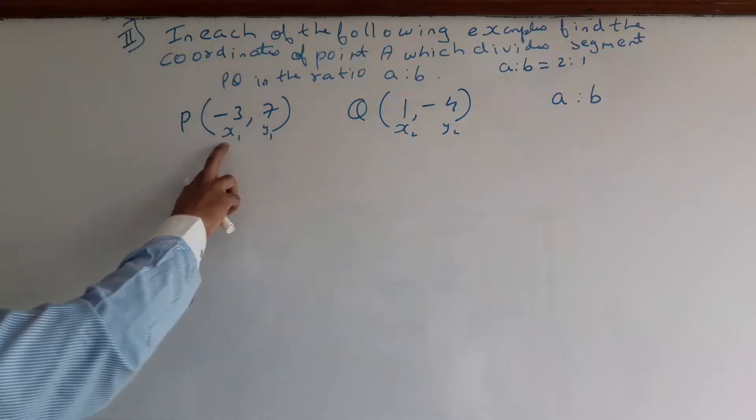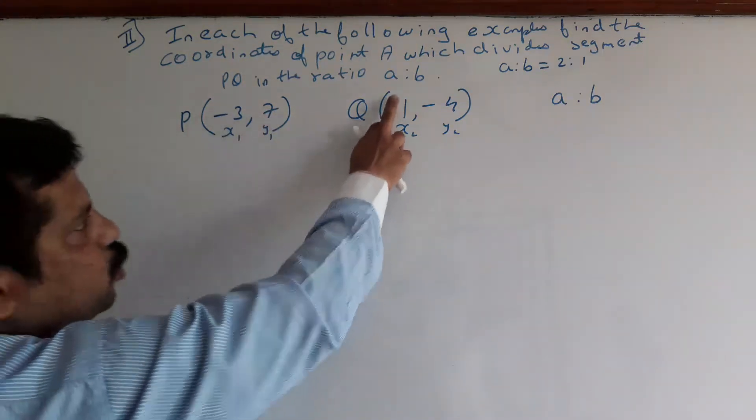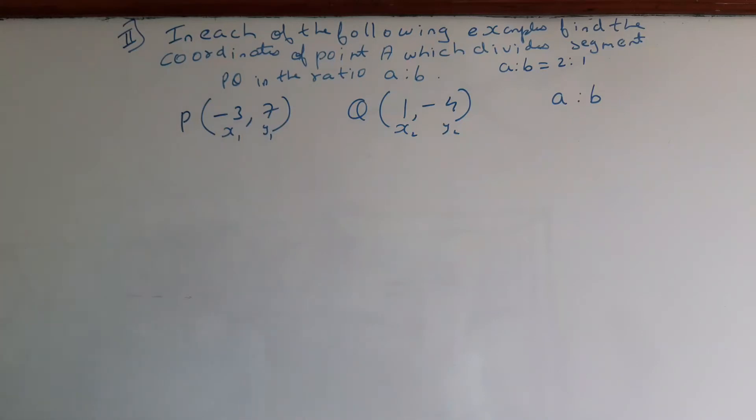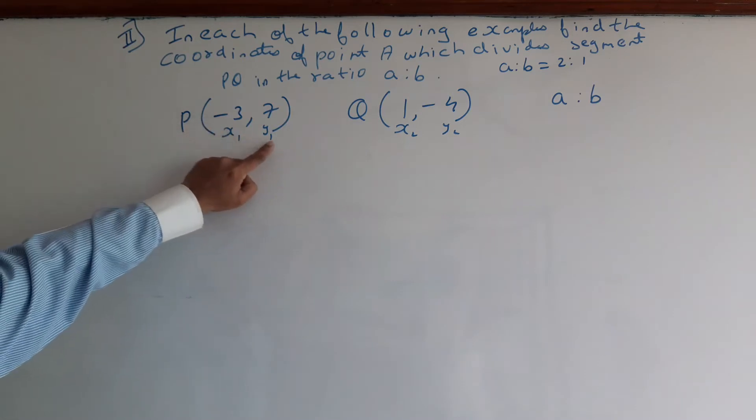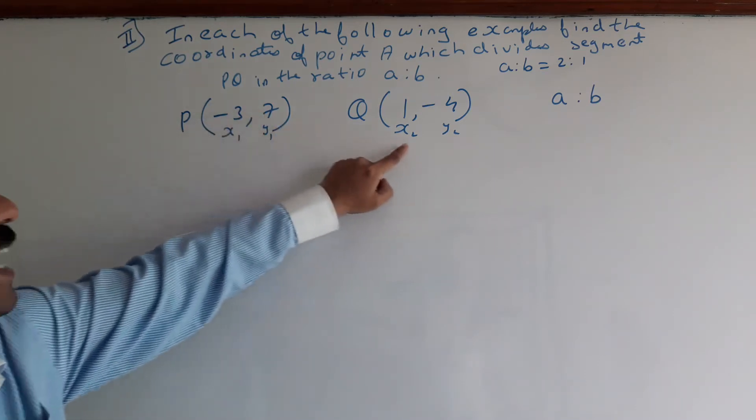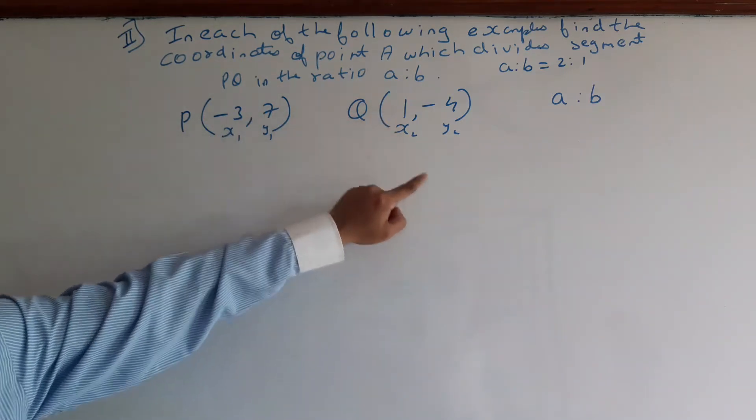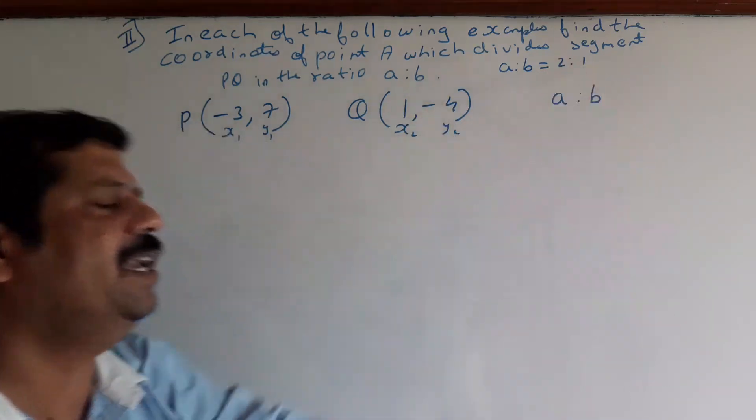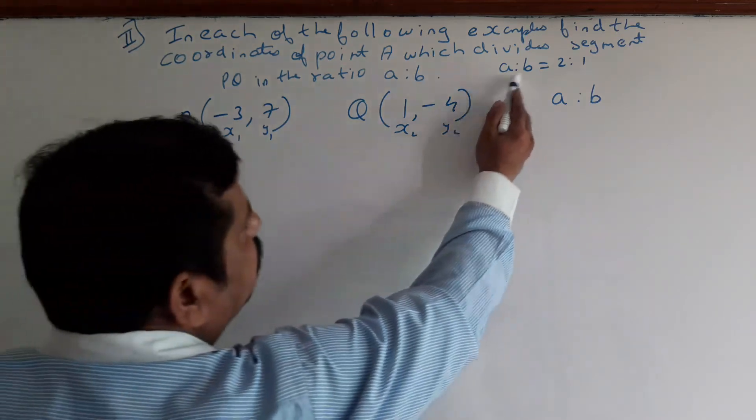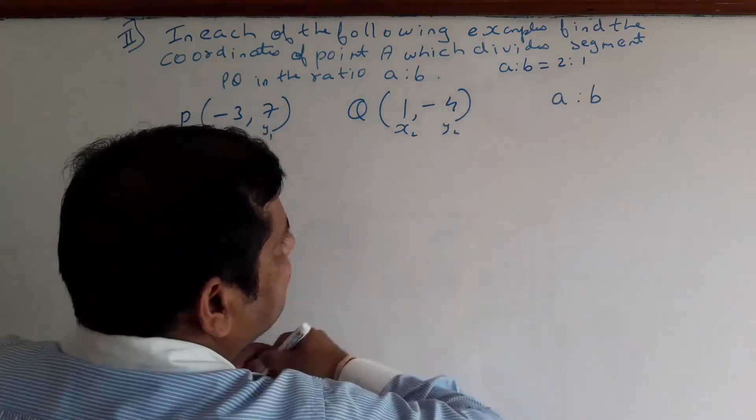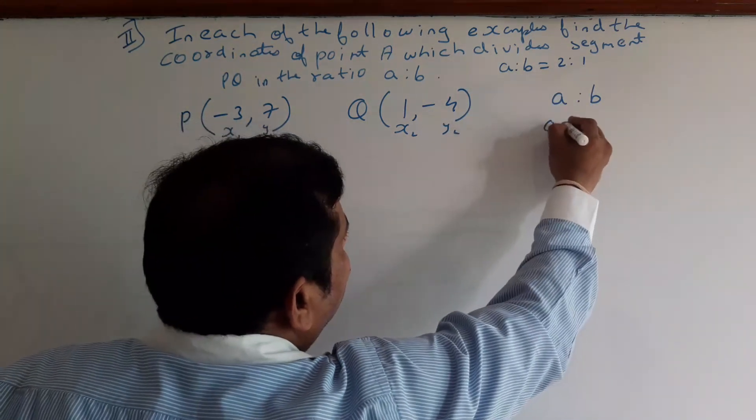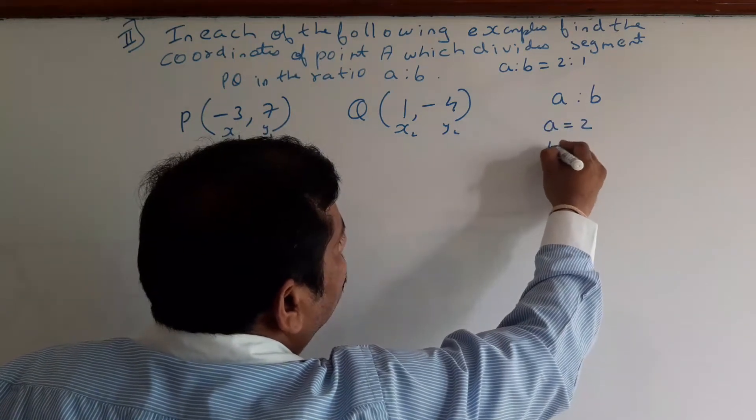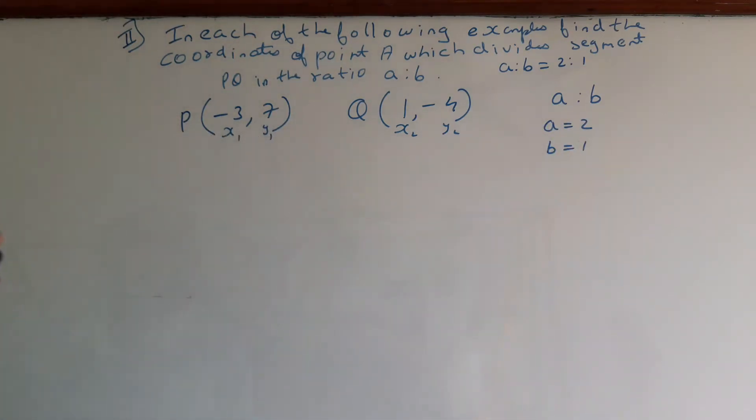Here we can name the coordinates X1, Y1, X2, Y2. So X1 equals -3, Y1 equals 7, X2 equals 1, Y2 equals -4. A ratio B is equal to 2 ratio 1, so A equals 2 and B equals 1.